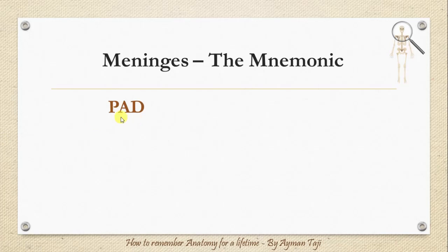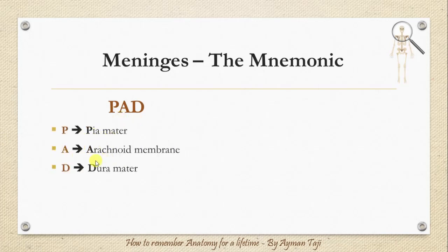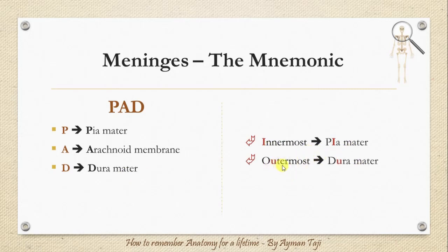To help you remember them in order from inside out, you can use the mnemonic 'PAD': first there is the piamater, then the arachnoid membrane, and finally from the outside the duramater. Another way to remember: the innermost one has the letter 'I', so it's the piamater, and the outermost one has the letter 'U', so it's the duramater.